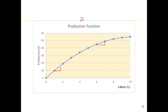Remember that the slope of our production function is equal to the marginal product of labour, and that's equal to the partial derivative of the production function with respect to labour: ∂f(k,L) / ∂L. For this course you should be able to calculate simple partial derivatives, particularly for a Cobb-Douglas production function.